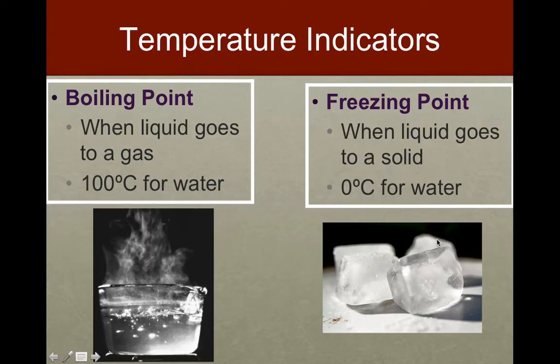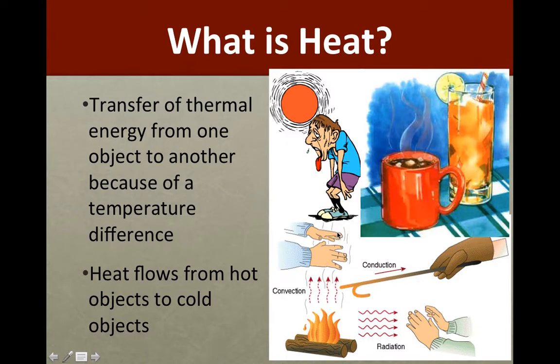Temperature indicators: when you have water, the boiling point is when a liquid goes to a gas, and the common temperature we have is 100 degrees Celsius. Freezing is when you have liquid going to a solid, and the temperature range for water is zero. Those are the ranges.